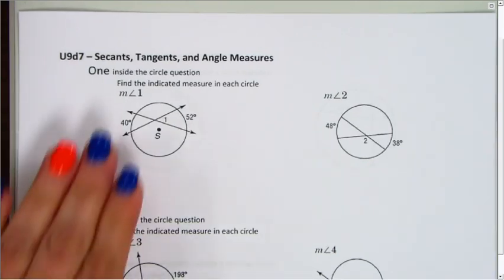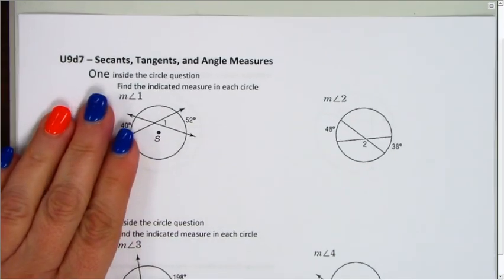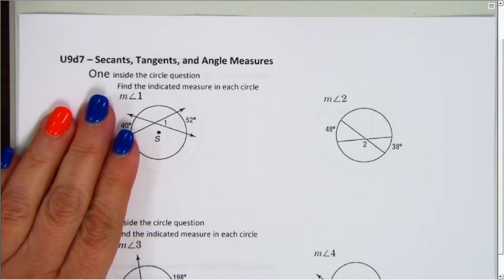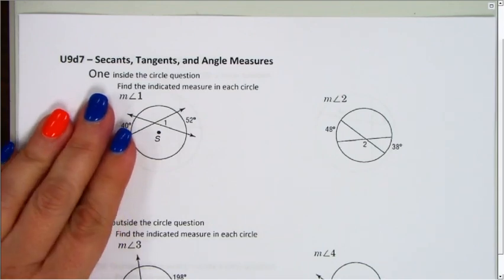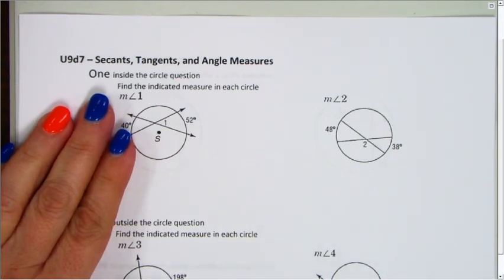On day 7 of unit 9, we looked at secants, tangents, and angle measures, and we talked about what happens if our angle is inside the circle, if it's on the circle, or if it's outside the circle.